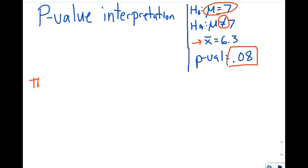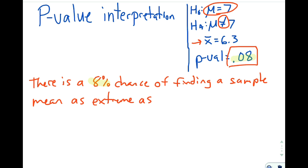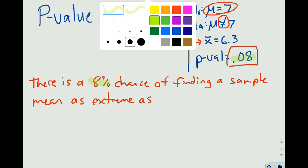That 0.08 is the probability of finding a sample average as extreme as I did when we assume that μ is 7. So let me write that out. There is an 8% chance, and that 8% chance comes from our p-value, a percent chance of finding a sample mean as extreme. Let me stop there because there's a couple word choices I made that I want to make sure I explain.